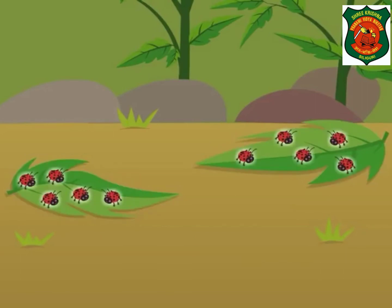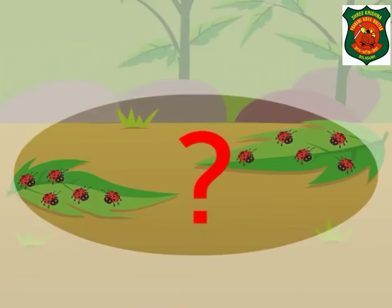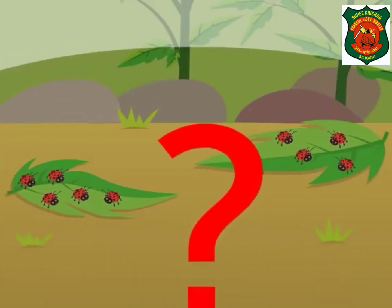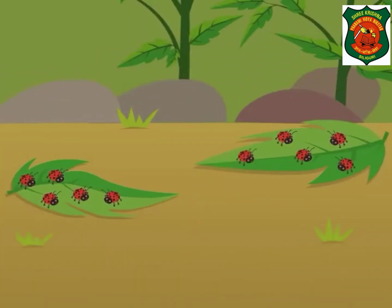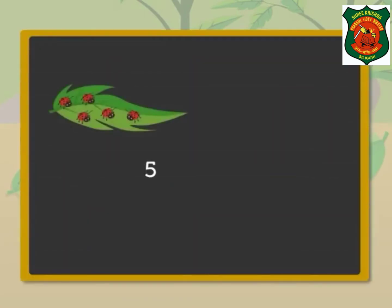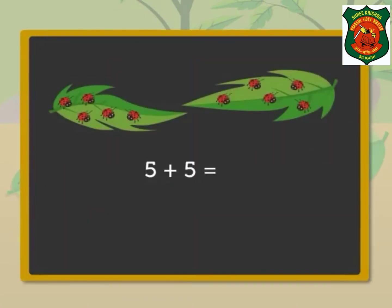Let's look at one more example. There are two leaves, and there are five ladybugs on each leaf. How many ladybugs are there in all? By adding, we get five plus five is equal to ten, and by multiplying we get two multiplied by five is equal to ten.